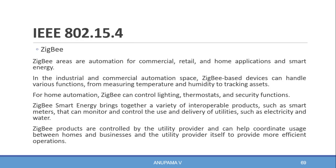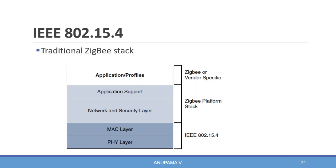The high-level ZigBee protocol stack includes application and profiles, application support, network and security layer, MAC layer, and PHY layer. The MAC and PHY layers are present in IEEE 802.15.4, upon which three additional stack layers are owned by ZigBee: the ZigBee platform stack and vendor-specific stack. We will learn in detail about the ZigBee stacks: the network and security layer, application support, and application and profiles.